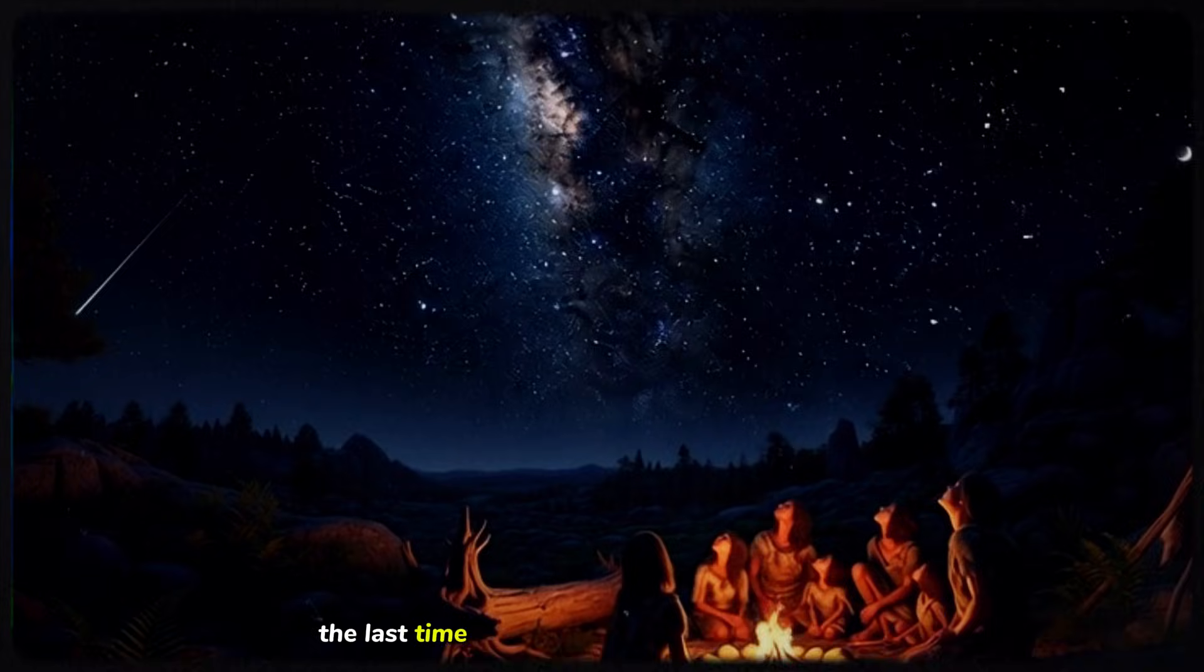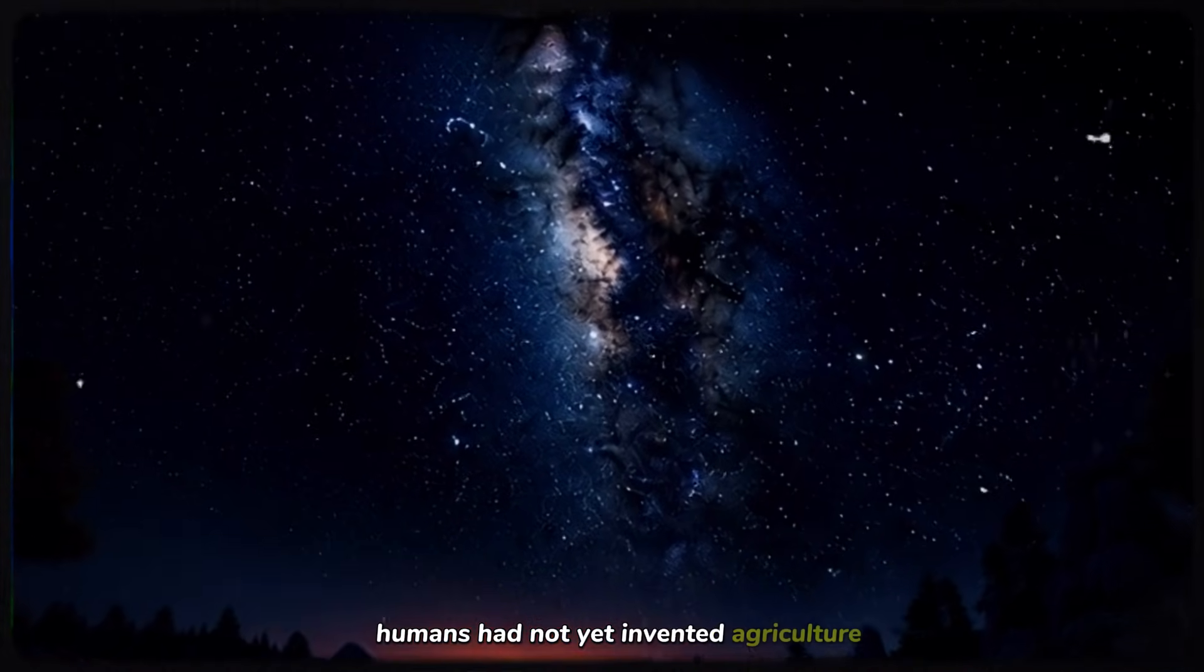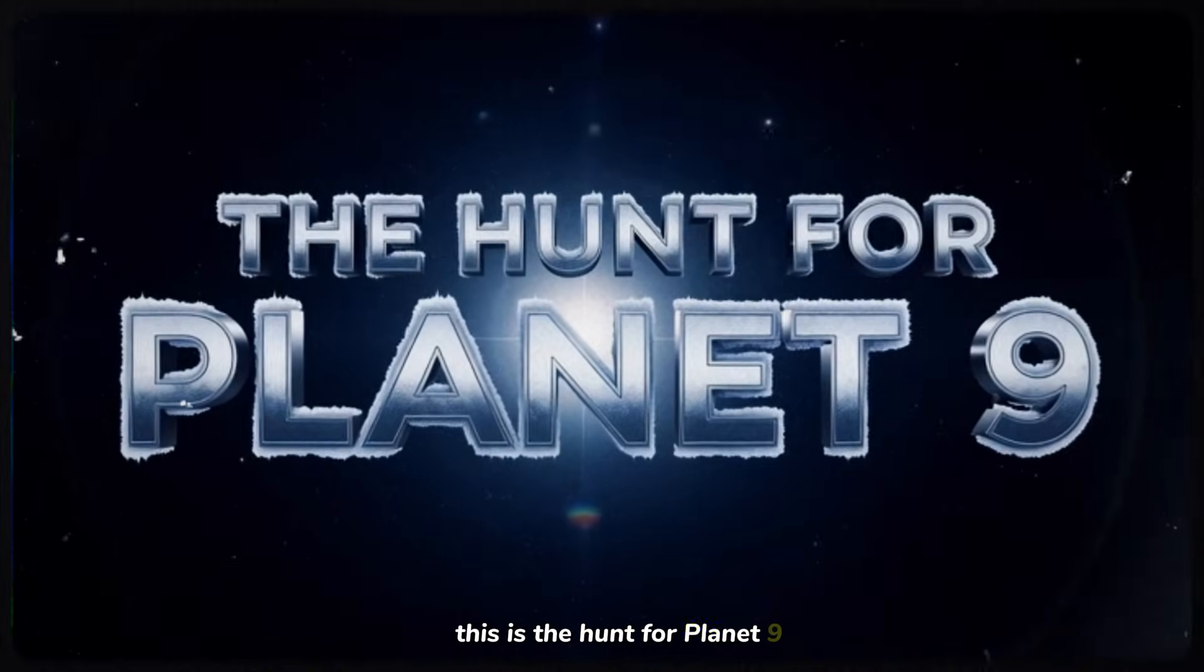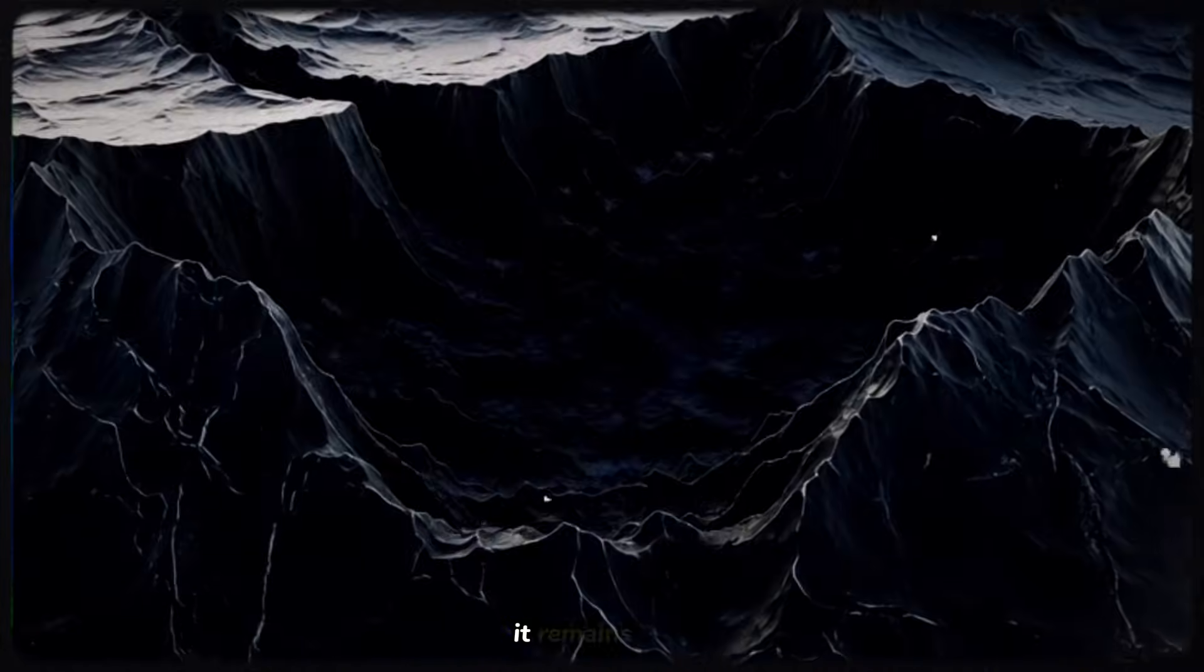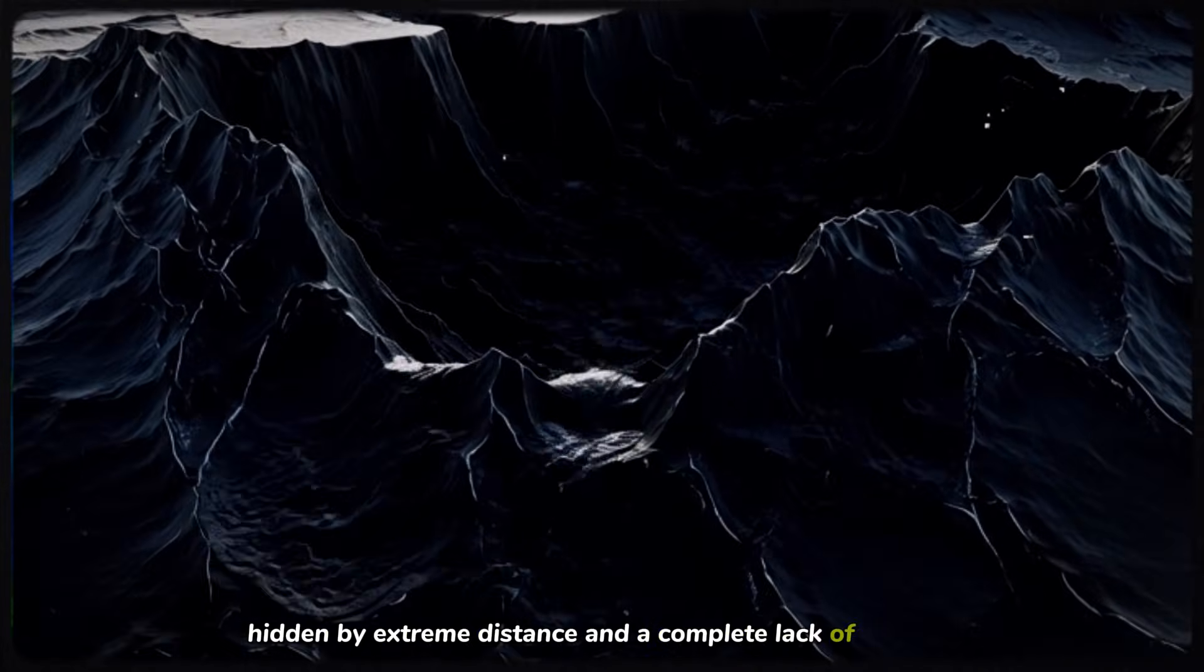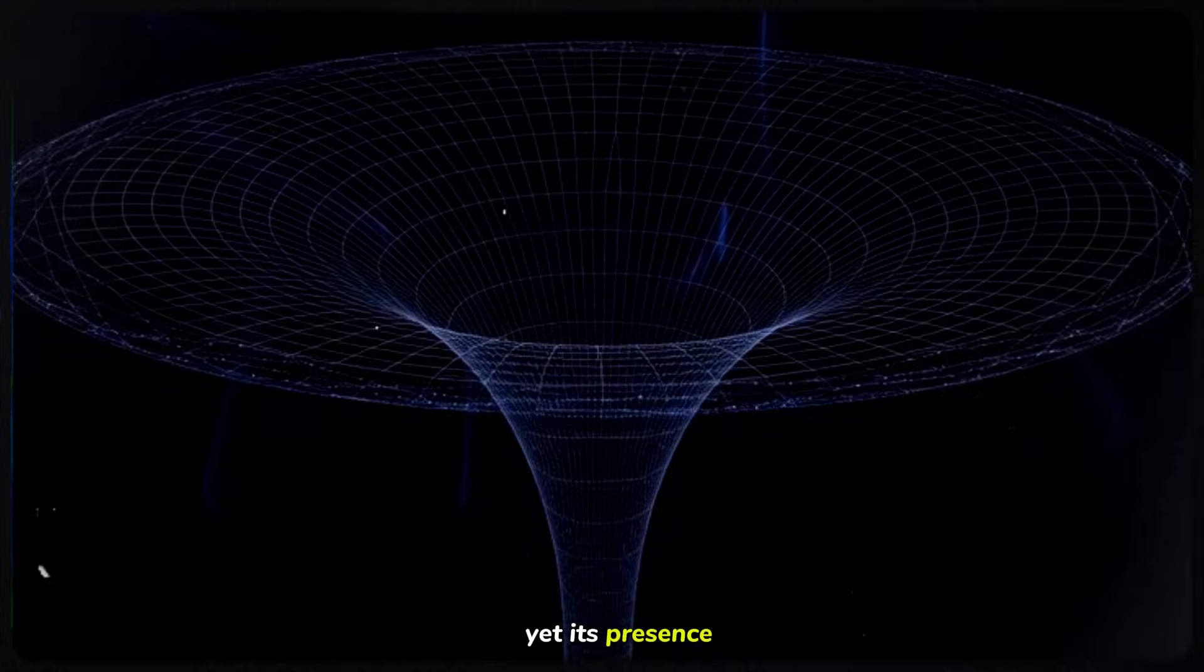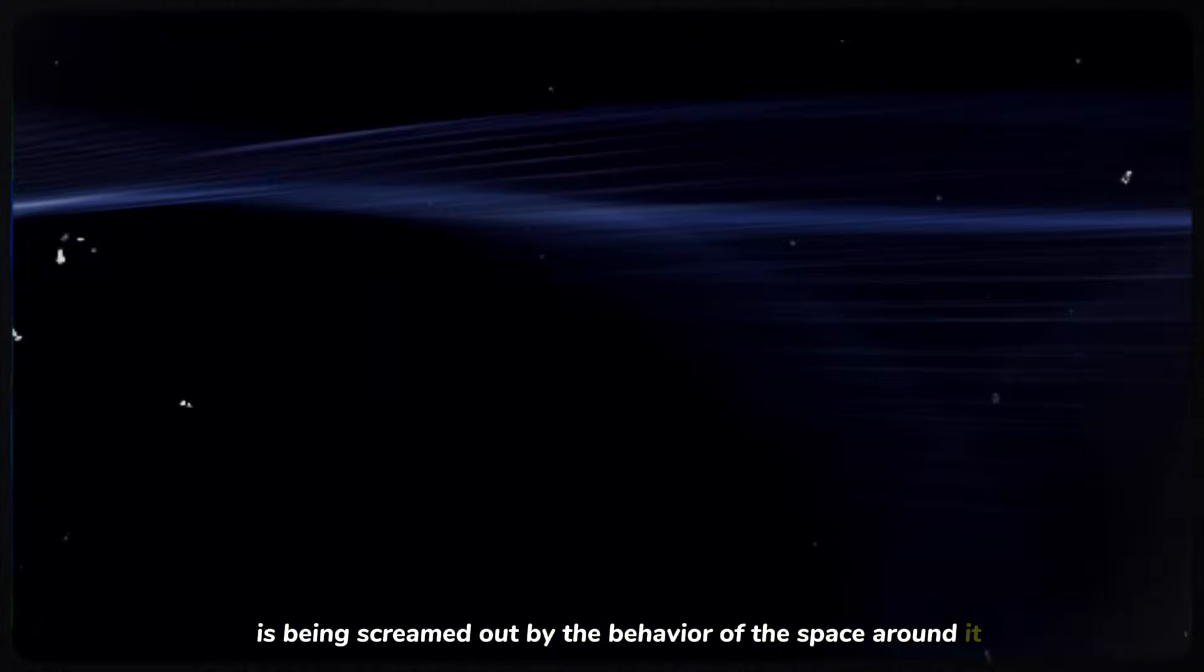To put that in perspective, the last time this planet was in this part of the sky, humans had not yet invented agriculture. This is the hunt for Planet 9. It is the most significant missing piece of our reality. It remains unseen, hidden by extreme distance and a complete lack of reflectivity, yet its presence is being screamed out by the behavior of the space around it.